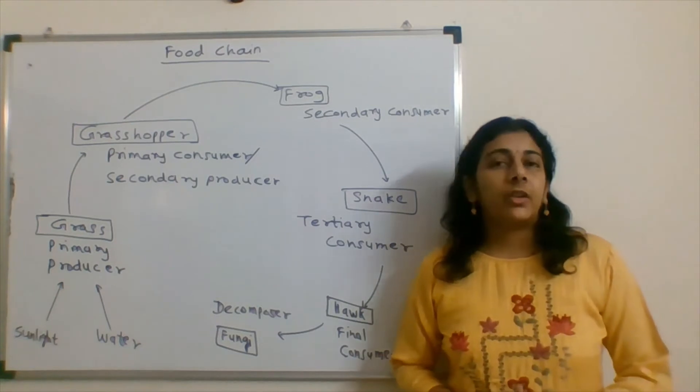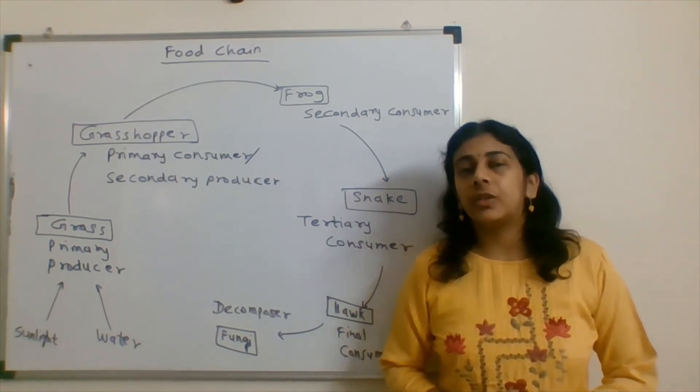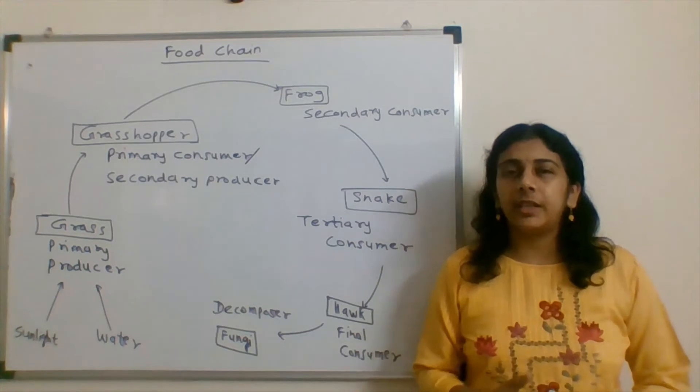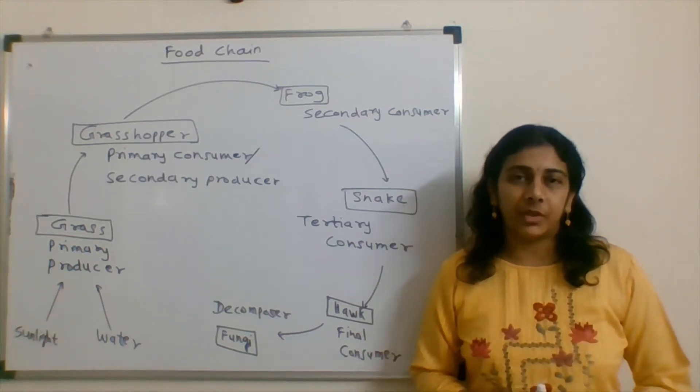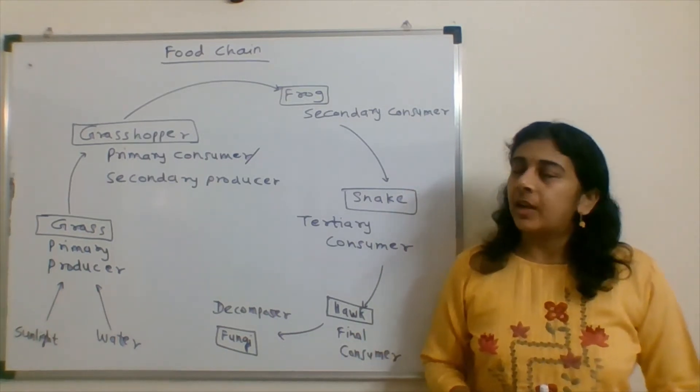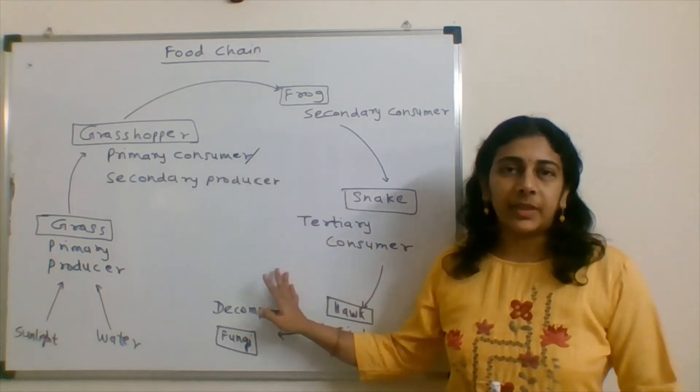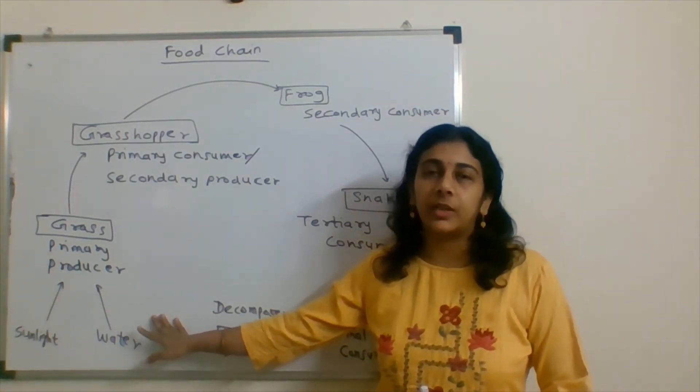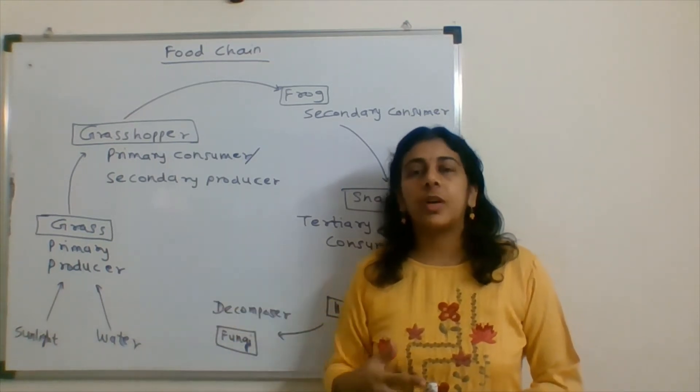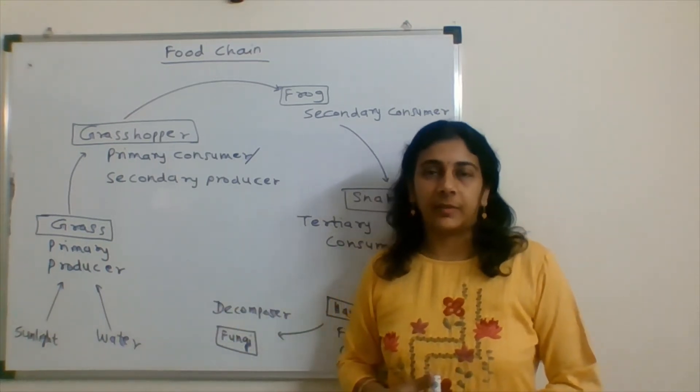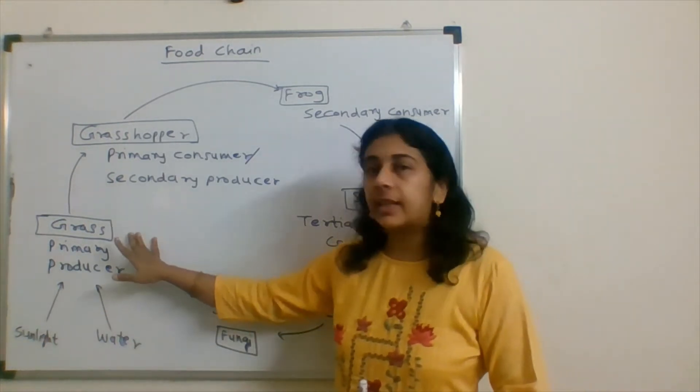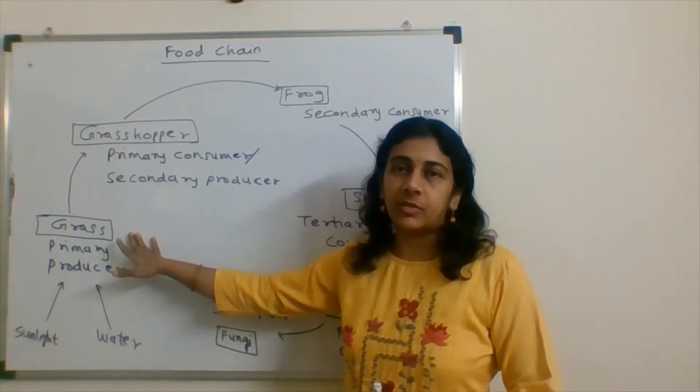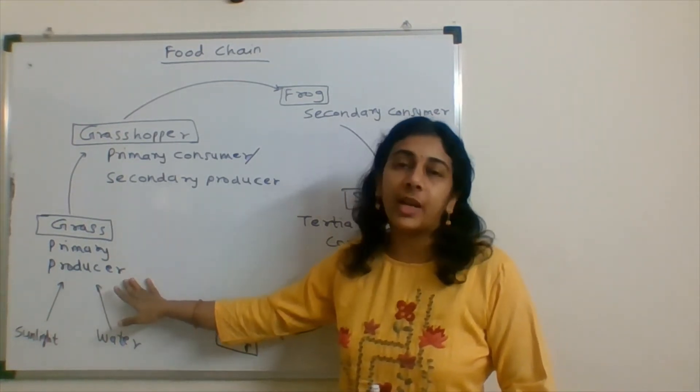When we talk about food chain in ecology, we come across consumers and producers. Here we have an example of a food chain. The food chain always starts with autotrophic organisms which create their own food.